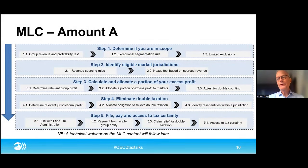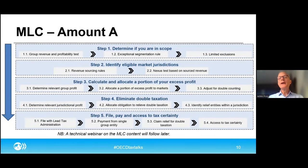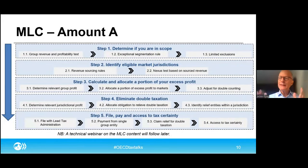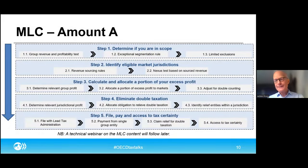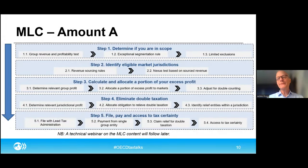Once you know you're in scope, you know your market jurisdictions, and whether you have nexus at the end of step two, you get to step three: determining the allocation tax base — what is the profit that we're taking. We start with financial accounts because this is what companies have, and we make some limited book-to-tax adjustments because we're using it as an allocation tax base. There is a trade-off: some say just take the financial accounts, but businesses and countries come in and say we do need to make some adjustments because there are particular circumstances. And that's the trade-off that we have reached.